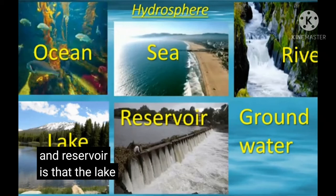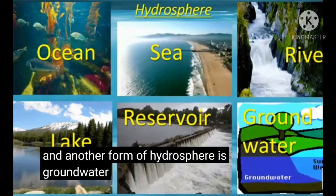The hydrosphere includes oceans, seas, rivers, lakes, reservoirs, and groundwater. Of the total global waters, 97.7% is contained in oceans. Most of the water that we use for domestic purposes comes from various reservoirs, lakes, groundwater, and rivers. Groundwater can be used for agriculture too.